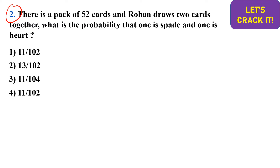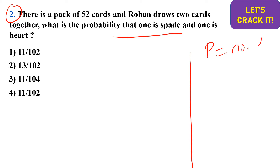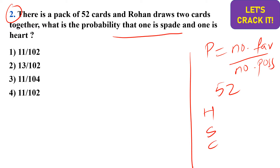The second question: there is a deck of 52 cards. Rohan draws two cards together. We need to find the probability that one is a spade and the other is a heart. The probability formula is number of favorables divided by total number of possibles. Out of 52 cards there are hearts, spades, clubs, and diamonds — 13 each, totaling 52.